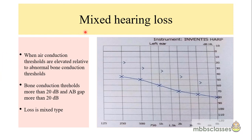Let us see the audiogram of mixed hearing loss. We call it mixed hearing loss when the air conduction thresholds are elevated — here around 60 to 70 dB for the left ear — relative to abnormal bone conduction thresholds, which are also elevated. The key difference from sensorineural hearing loss is that the AB gap is more than 20 dB. When the bone conduction threshold is elevated and the AB gap is more than 20 dB, the loss is plotted as mixed hearing loss.